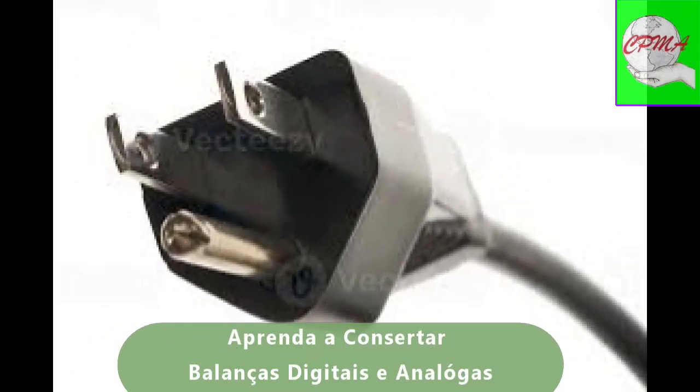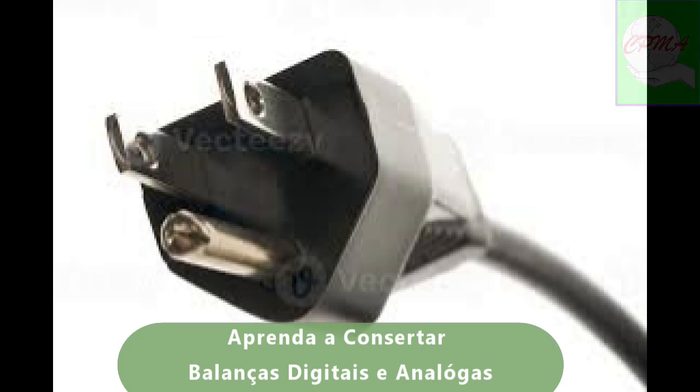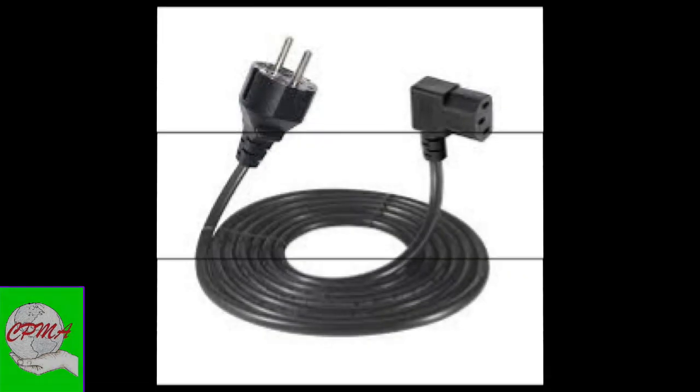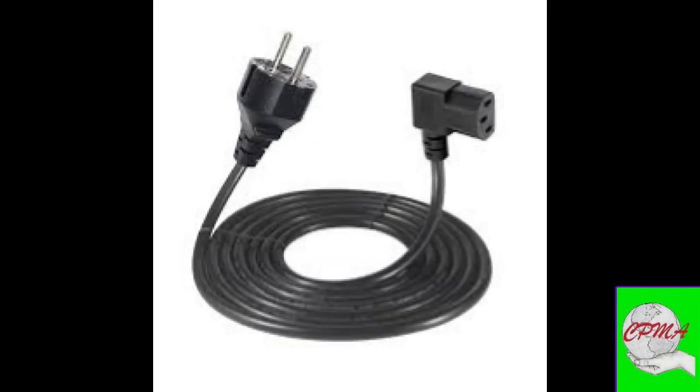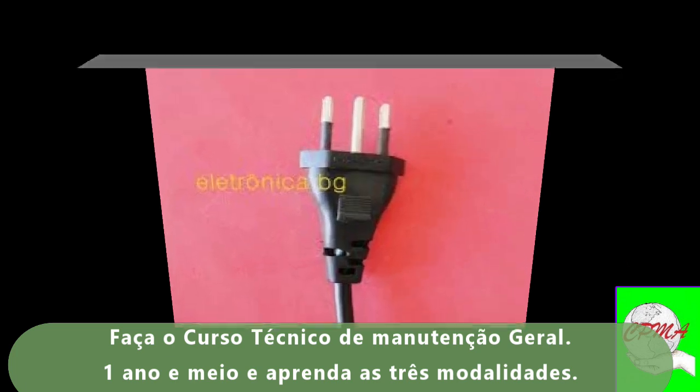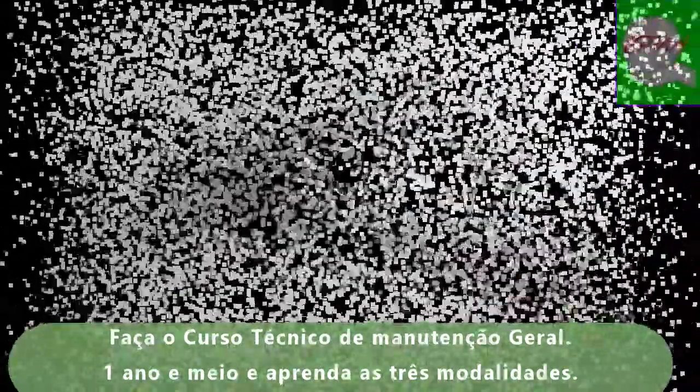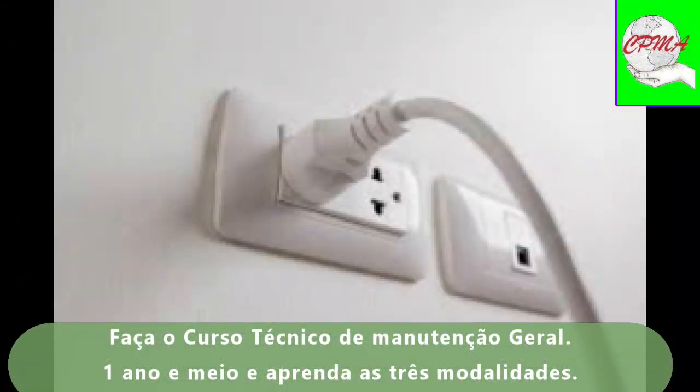A energia elétrica da linha CA corrente alternada é aplicada ao equipamento por meio de uma linha CA corrente alternada que se conecta ao J101. J101 é o conector onde entra o cabo de energia elétrica, aquele cabo do microscópio onde você conecta na tomada.